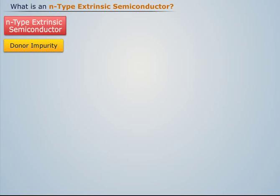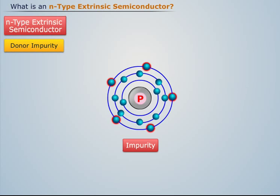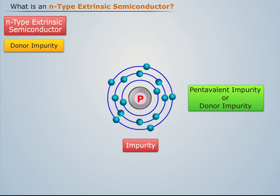But first, let us understand what donor impurity is. If the impurity consists of five valence electrons, then it is known as the pentavalent impurity or donor impurity.